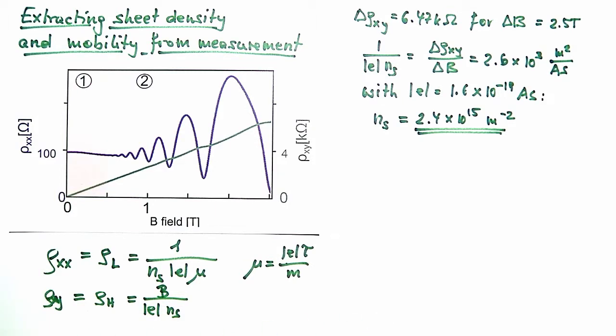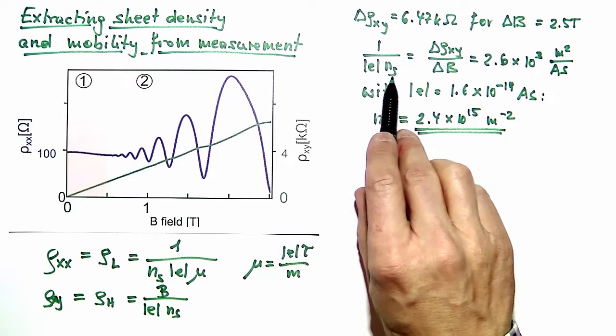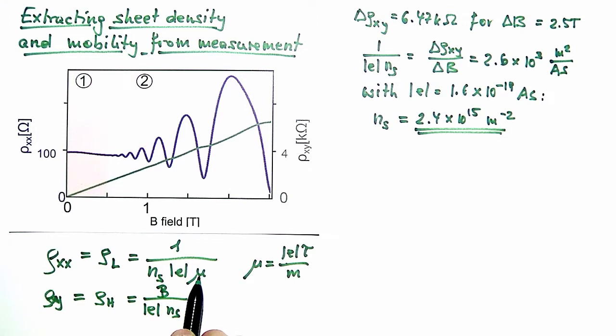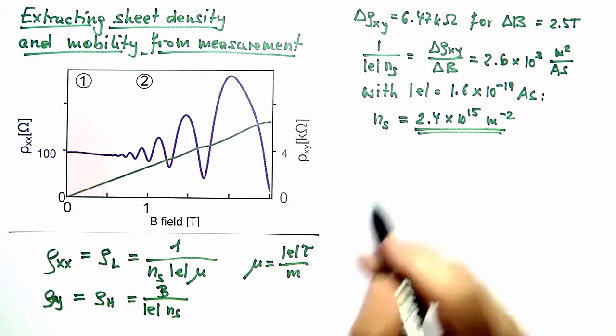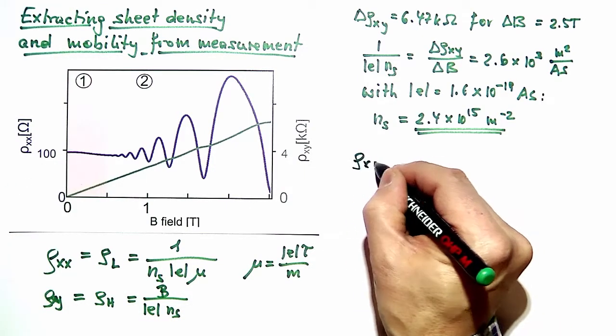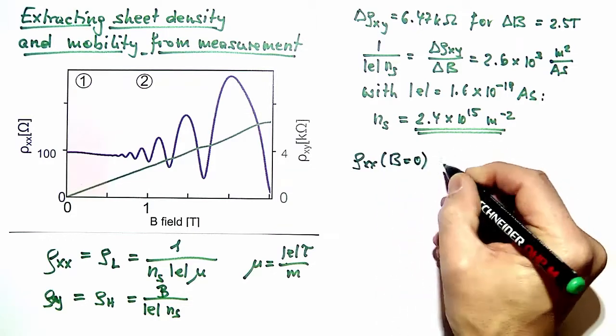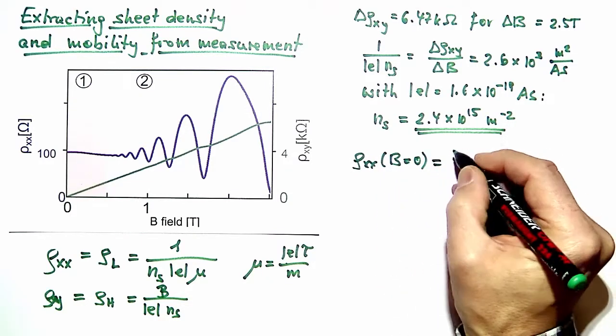For determining the mobility, we will now make use of the knowledge of 1 divided by E N_S, which was our expression for the Hall resistivity here. And we see that mu is just given by this 1 divided by e times sheet carrier density divided by rho_xx.